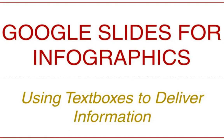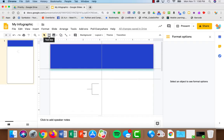Text is a critical component to any infographic, as that's what you're using to tell your story. The text box icon here in the icon bar allows you to add text. We'll use font, font size, and color to add interest.